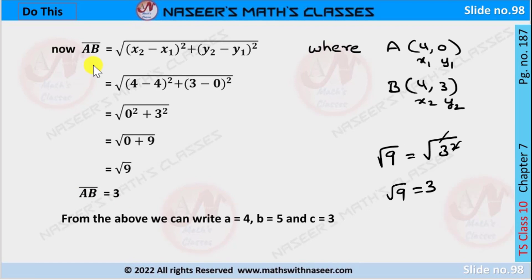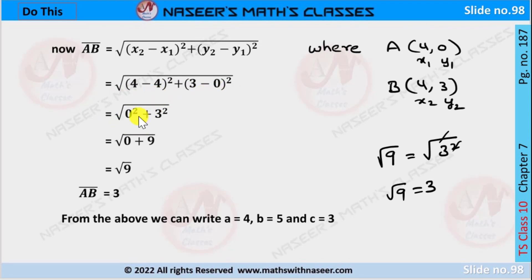Next we find the length of AB. Here A coordinates (4,0) are x1,y1 and B coordinates (4,3) are x2,y2. Substituting in the distance formula gives the square root of (4 minus 4) squared plus (3 minus 0) squared. 4 minus 4 is 0 and 3 minus 0 is 3, so we get the square root of 0 squared plus 3 squared, which is the square root of 9, equal to 3. Therefore AB is equal to 3 units.